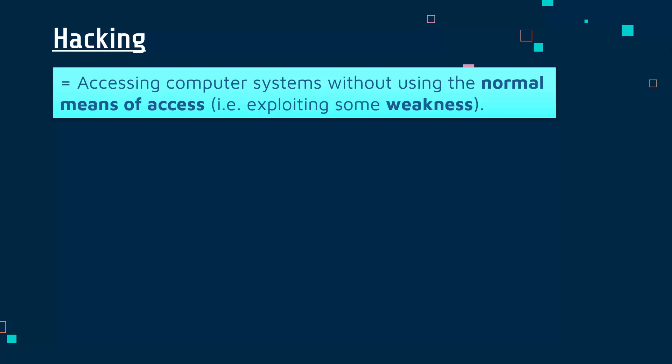In other words, they are exploiting some weakness in the system — the system being a computer, a network, or both, or a program. There is some weakness which is being exploited and they haven't got normal means of access, which means they're not authorised. That means they haven't got a password, haven't got a login — they are kind of breaking in via some weakness.